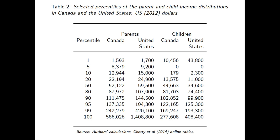Here are some descriptive statistics of income percentiles in the two countries. These are average incomes at those percentiles. In the United States, being in the top fifth percentile means substantially more income than in Canada — both for parents and for children. The income distributions are very different: there is much more inequality at the top end in the US.